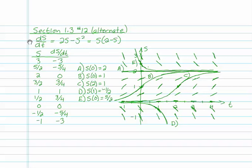Let's take a problem ds/dt is 2s minus s squared. We can factor that and write s times 2 minus s.